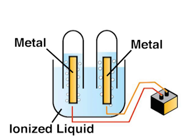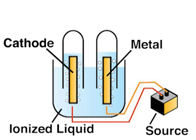Ions can have a positive or a negative electrical charge. The two electrodes are connected to a source of electric current. One electrode, called the cathode, takes on a negative charge. The other, called the anode, takes on a positive charge.